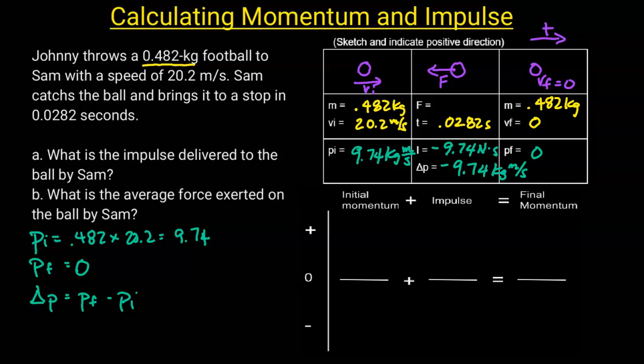Those units are equivalent to kilogram meters per second, so you can use either. But because impulse is equal to force times time, I like to use Newton-seconds. To get the force, we're going to use the impulse equation: force times time.